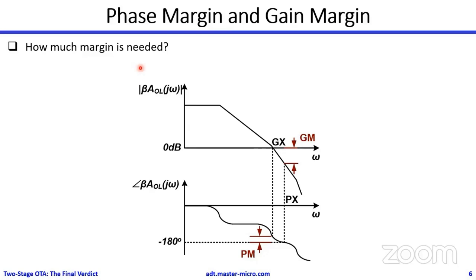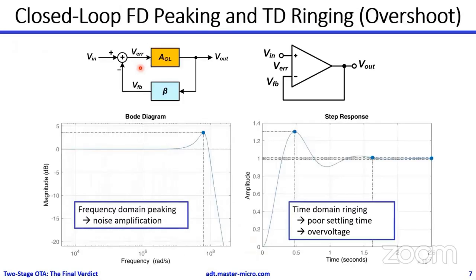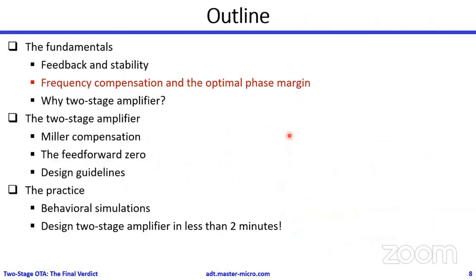How much margin do we need? If we have a small phase margin, what goes bad? If we close the loop with a small phase margin, we end up with peaking in the closed-loop frequency response and ringing - oscillatory behavior - in the step response time domain. Most of the time we don't want this peaking behavior in the frequency domain or overshoot in the time domain. To avoid or control this behavior, we use frequency compensation.